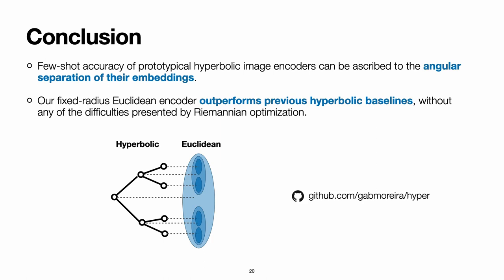In conclusion, in this paper, we set out to show that the few-shot accuracy of prototypical hyperbolic networks can be ascribed just to the angular separation of the embeddings.